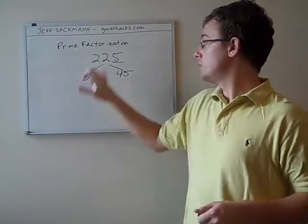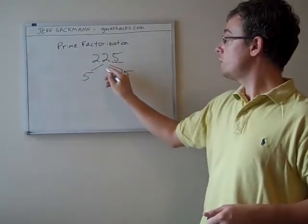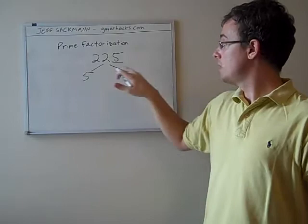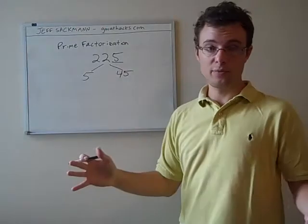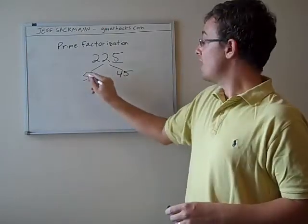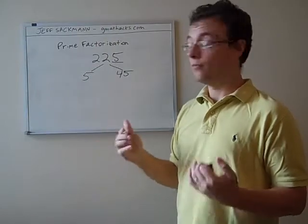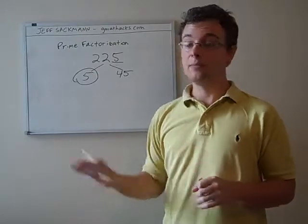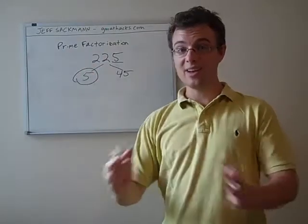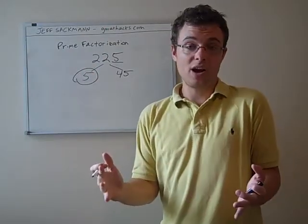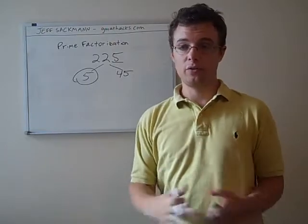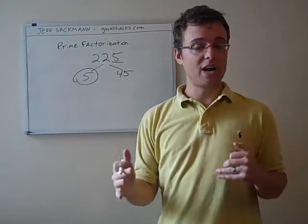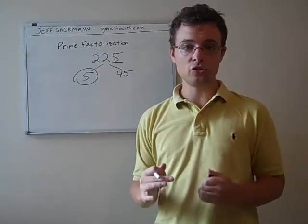What this tree metaphor means is 225 is made up of 5 times 45. Now, 5 is a prime. We know it's a factor of 225, we've got it in the tree. Because it's a prime, we're going to circle it. We're not going to break that down any further. Because it's prime, we can't break it down any further—5 is just 1 times 5.